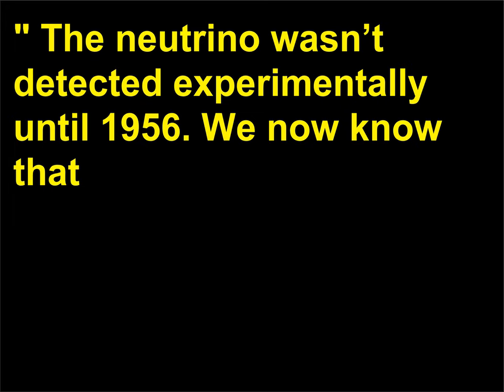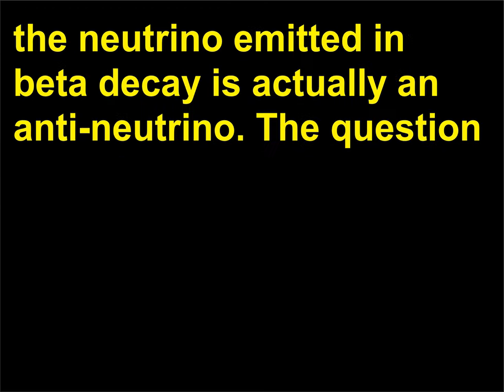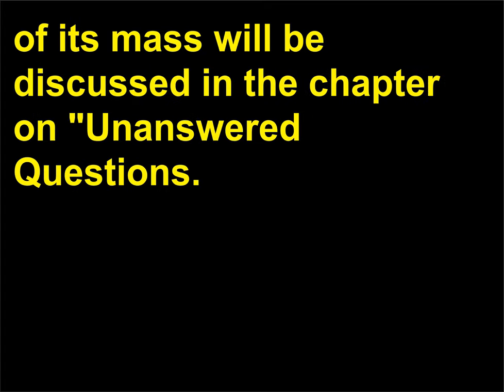The neutrino wasn't detected experimentally until 1956. We now know that the neutrino emitted in beta decay is actually an anti-neutrino. The question of its mass will be discussed in the chapter on unanswered questions.